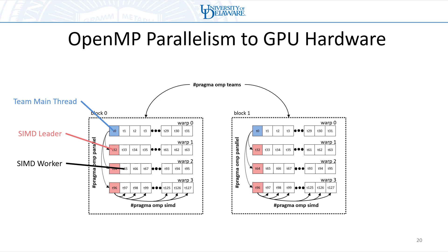This diagram shows how we're mapping a GPU thread block into OpenMP concepts, classifying threads into three categories. One thread per thread block is the main thread for the team — same as before. A certain number of threads per warp — in this case one thread per warp — will be classified as the SIMD leader, which is in charge of executing parallel regions and communicating with the SIMD workers. Every other thread is then a SIMD worker. So: the team main thread executes OpenMP teams code, the SIMD leader executes OpenMP parallel code, and the SIMD worker executes OpenMP SIMD code.